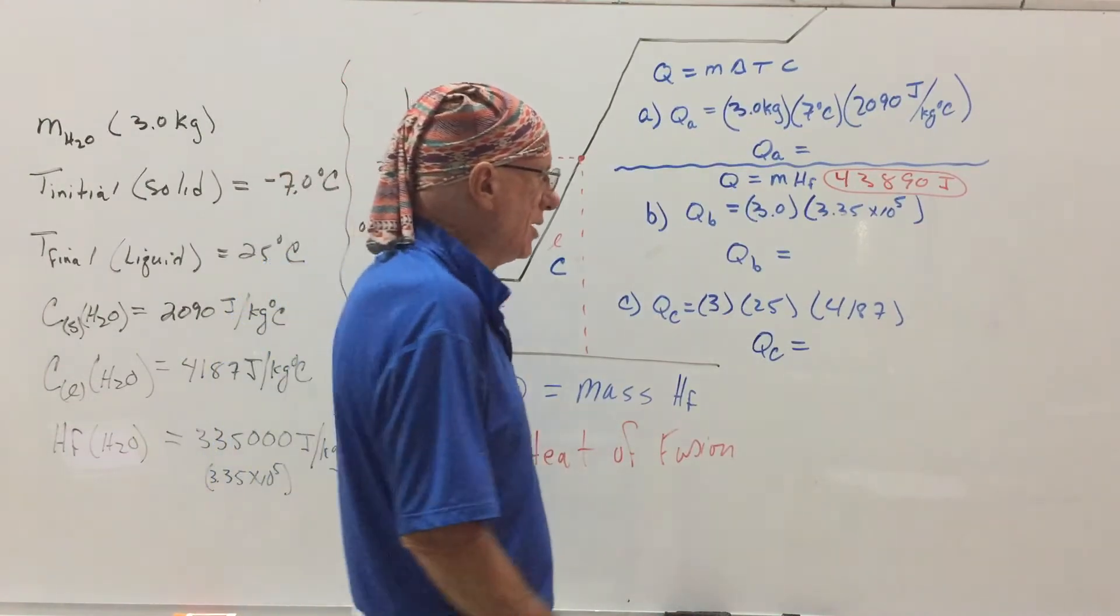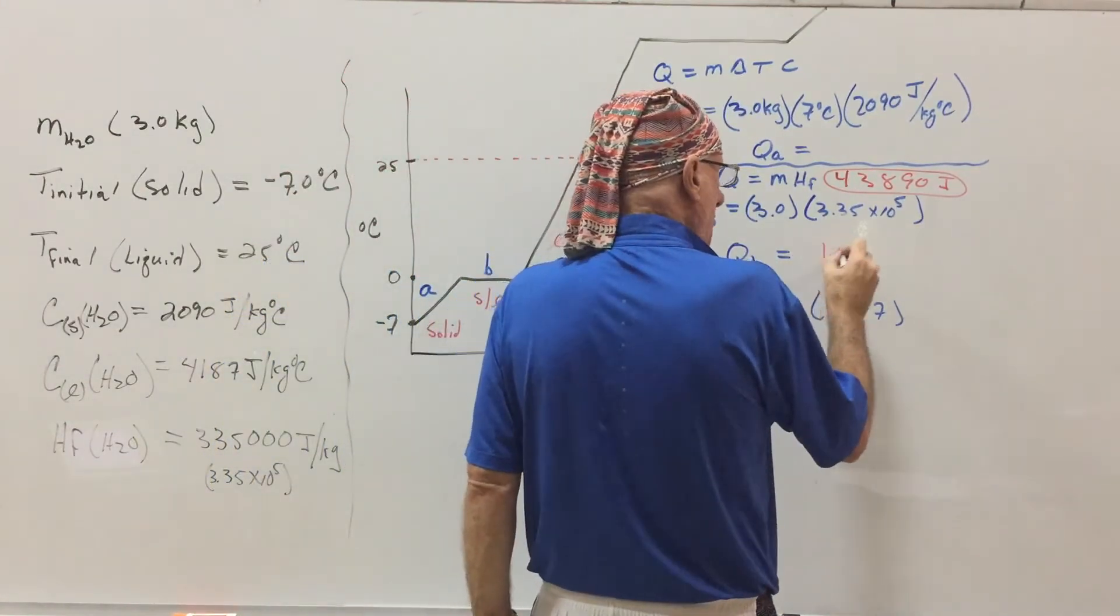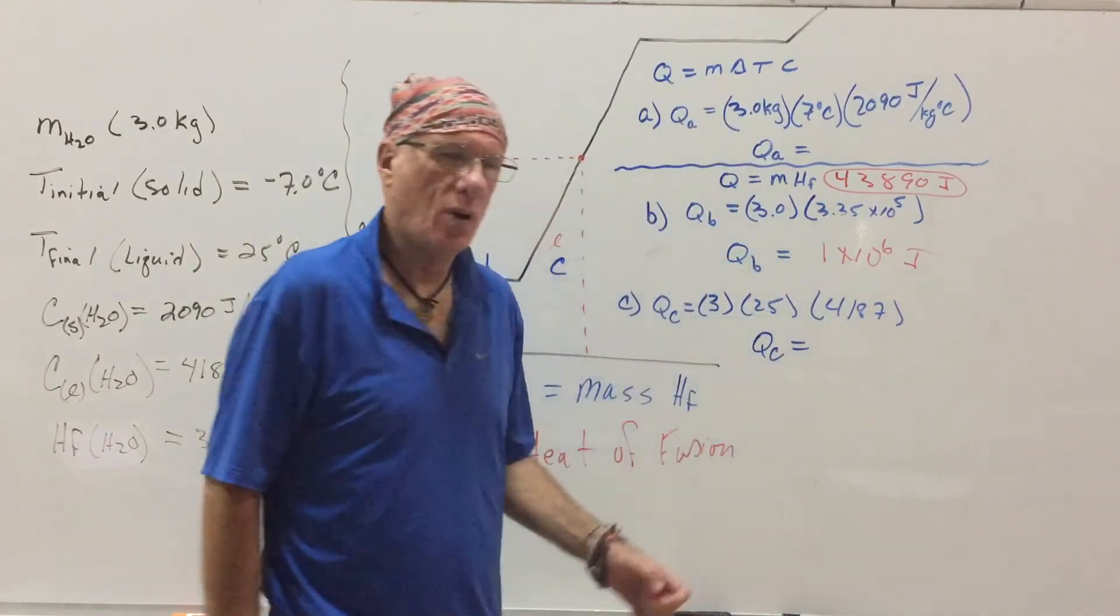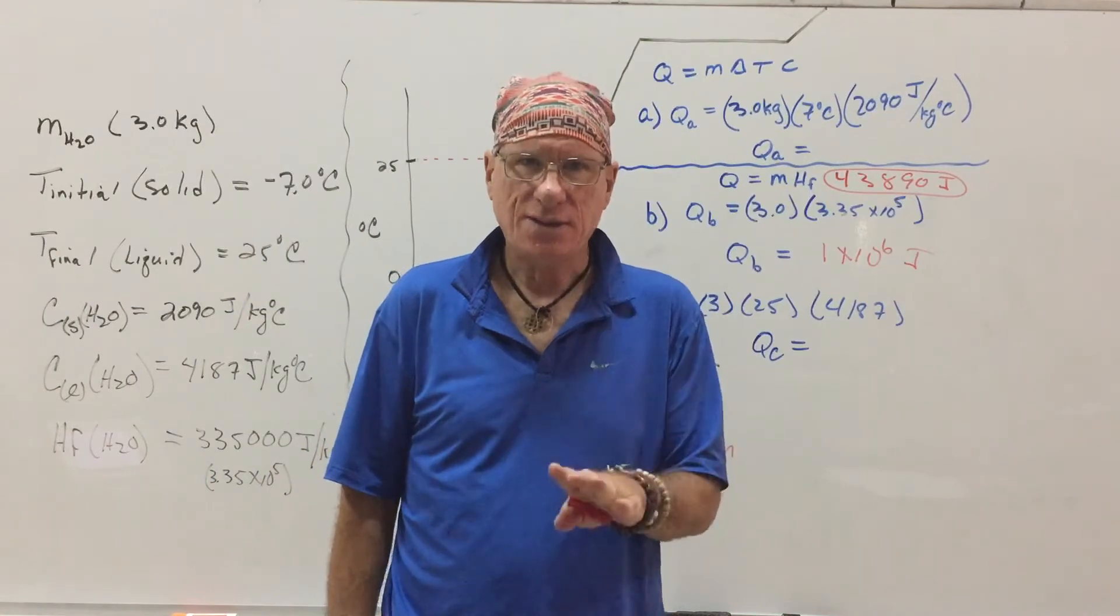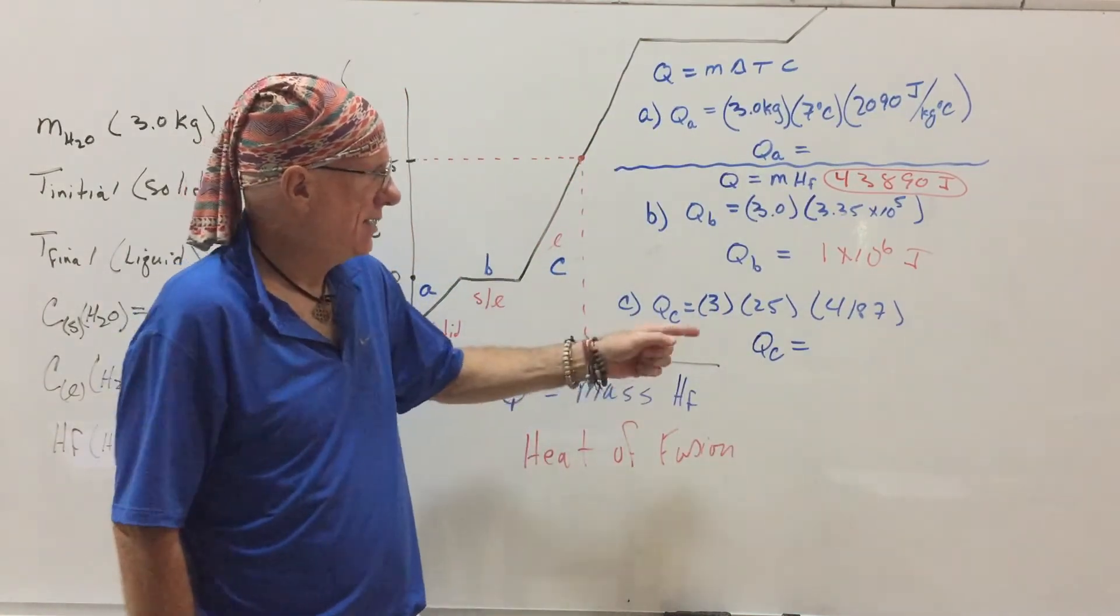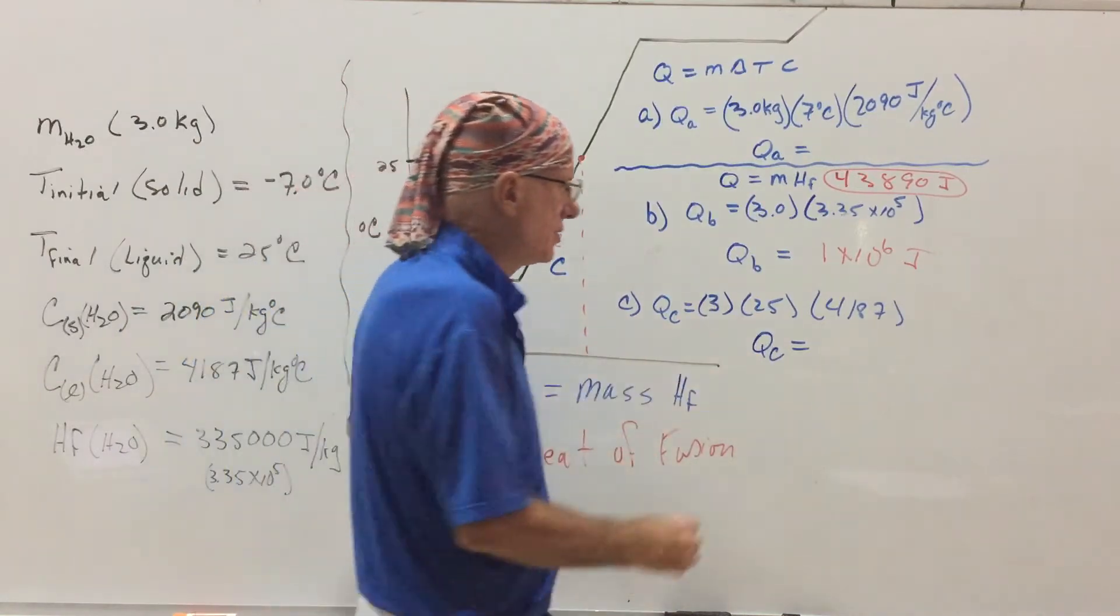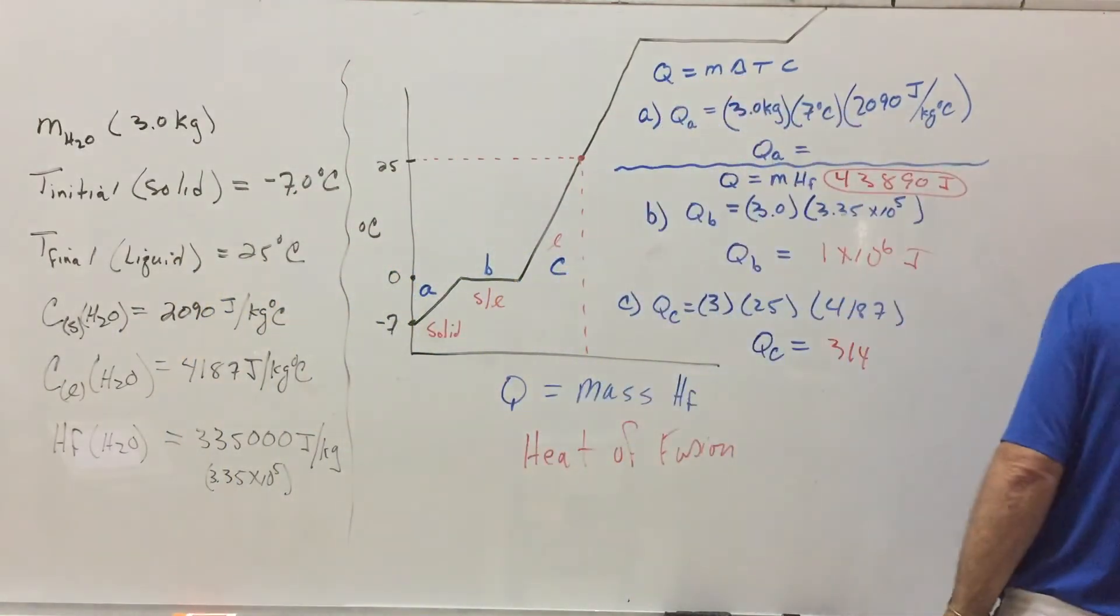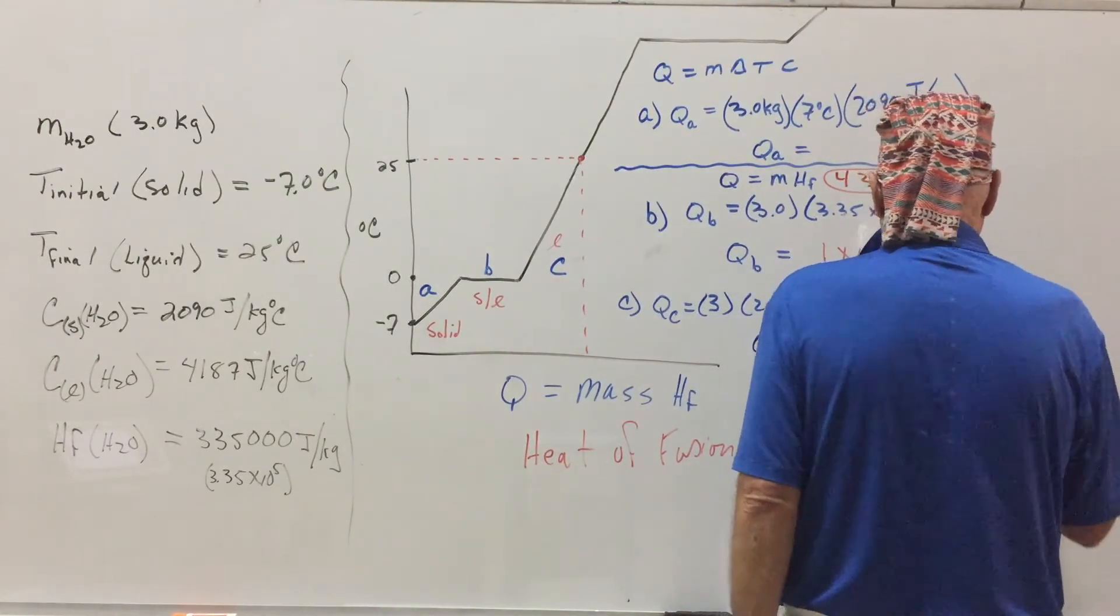The next one is going to be just something 1 times 10 to the 6 joules, or 1.005 times 10 to the 6. I just rounded it. It's easy. And then this one is going to be 314,025 joules.